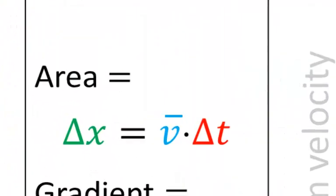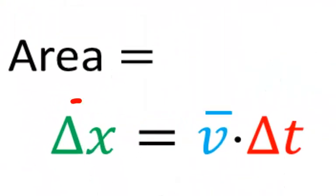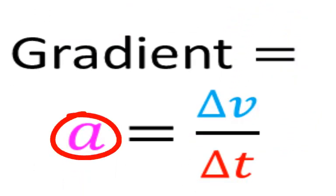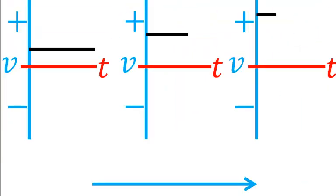The area underneath a velocity time graph tells us displacement, change in position, how far the man went in this case. The gradient tells us acceleration, how much the velocity changed per time. So if we compare these three graphs, we see, of course, in the first case, the motion took a long time. In the second case, it took shorter, and in the last case, it took the shortest.